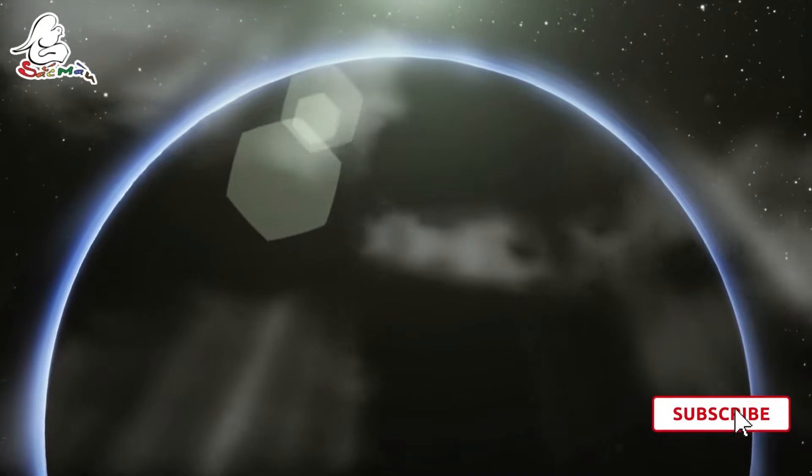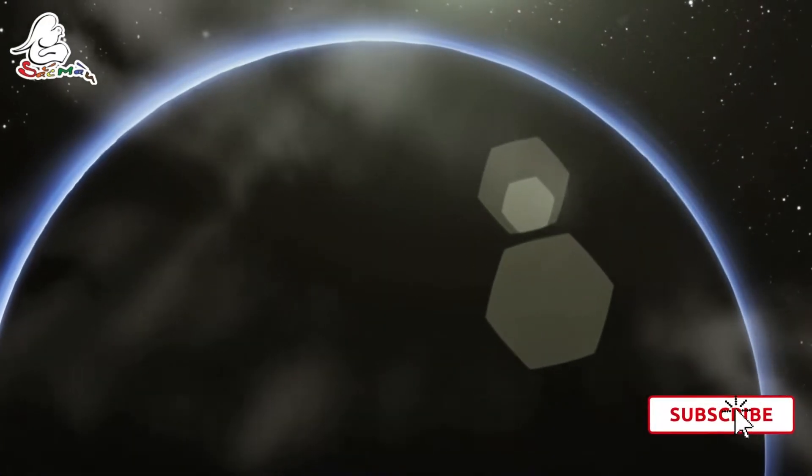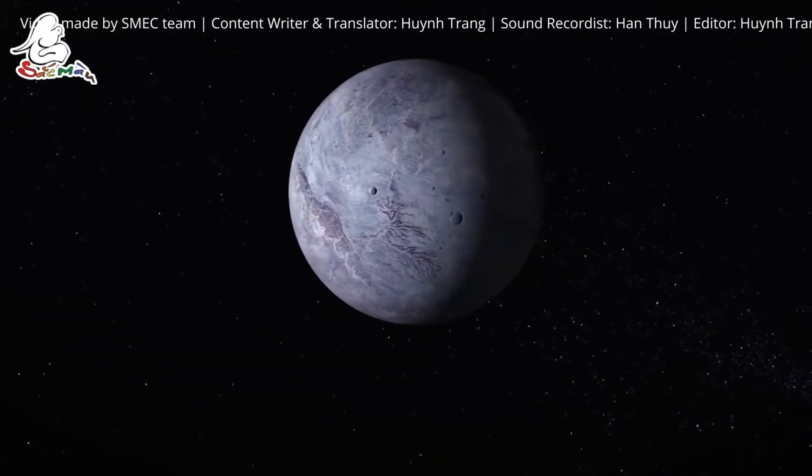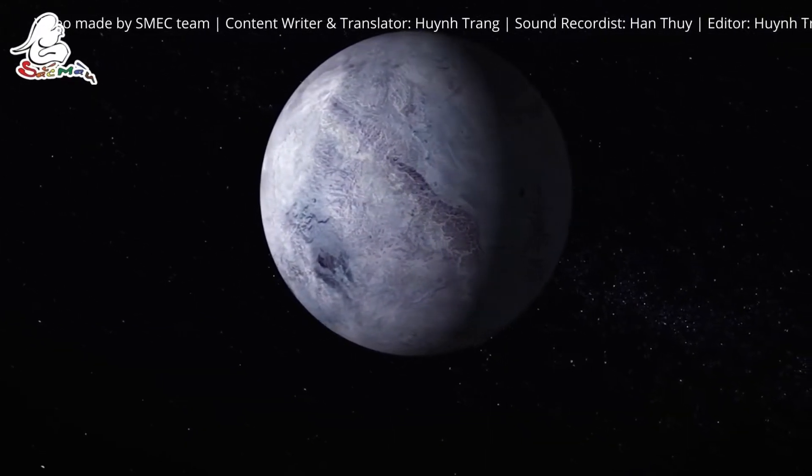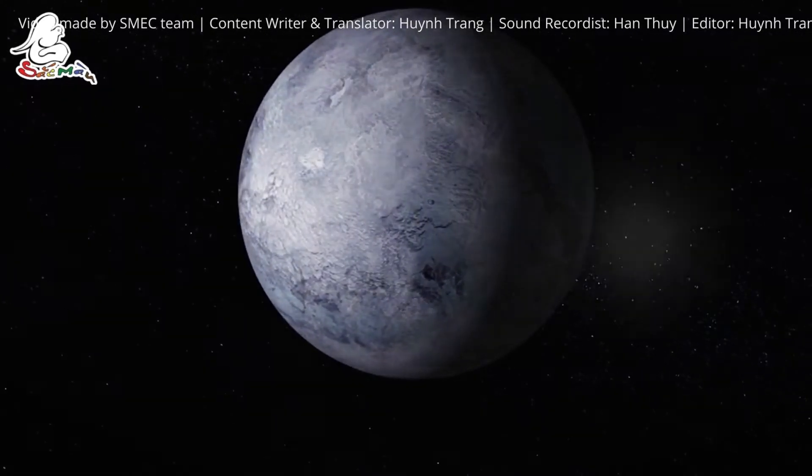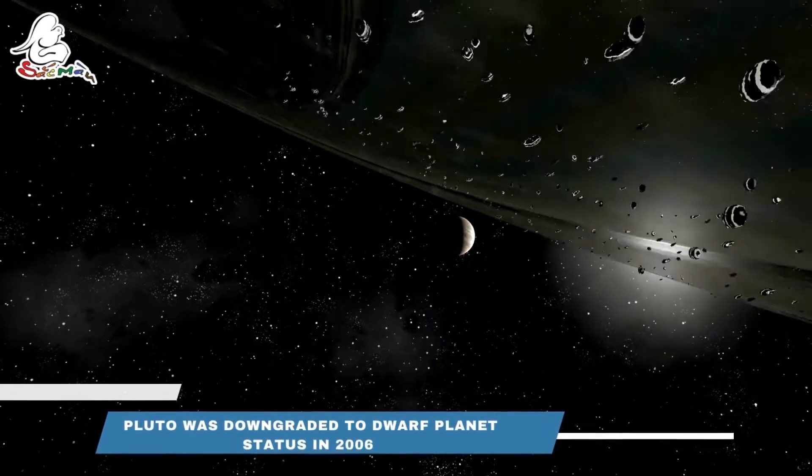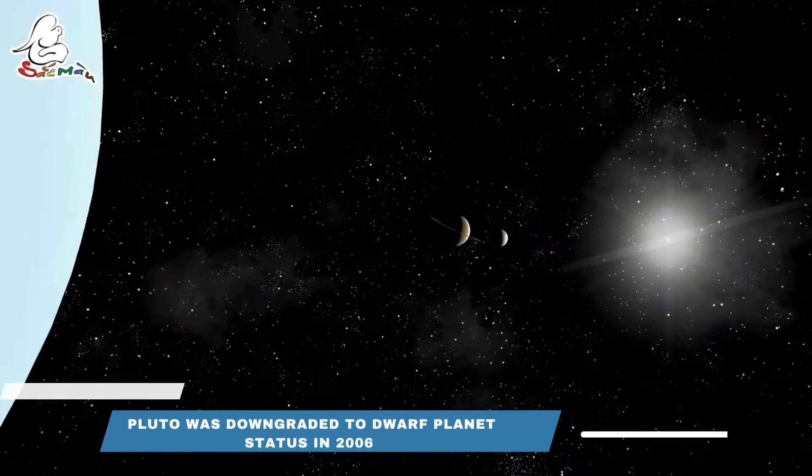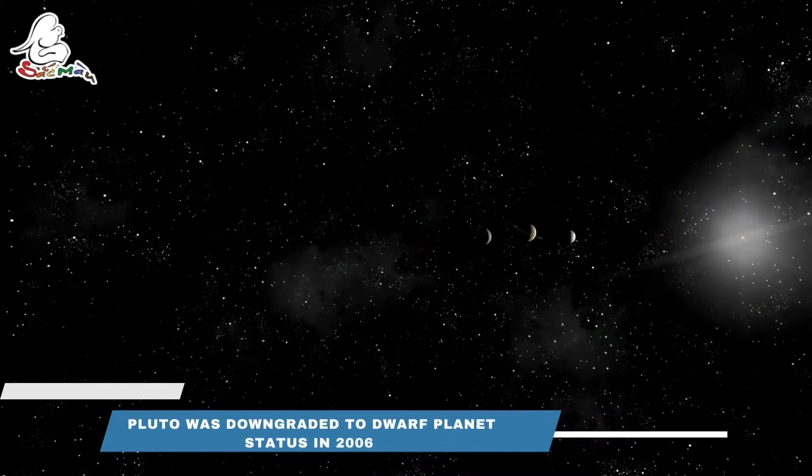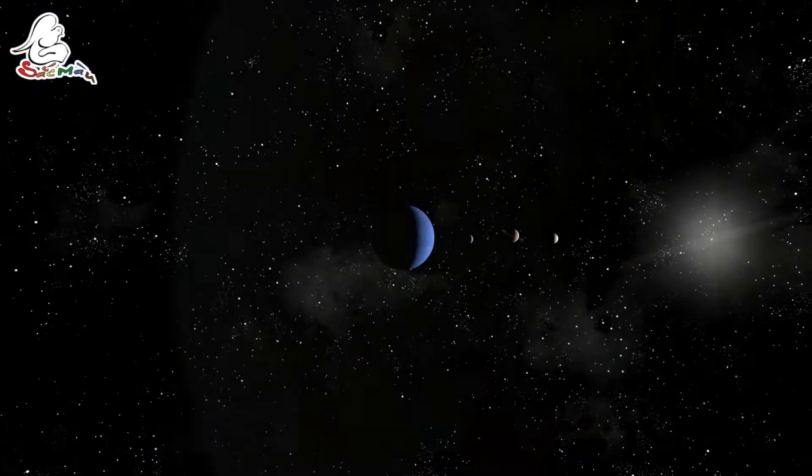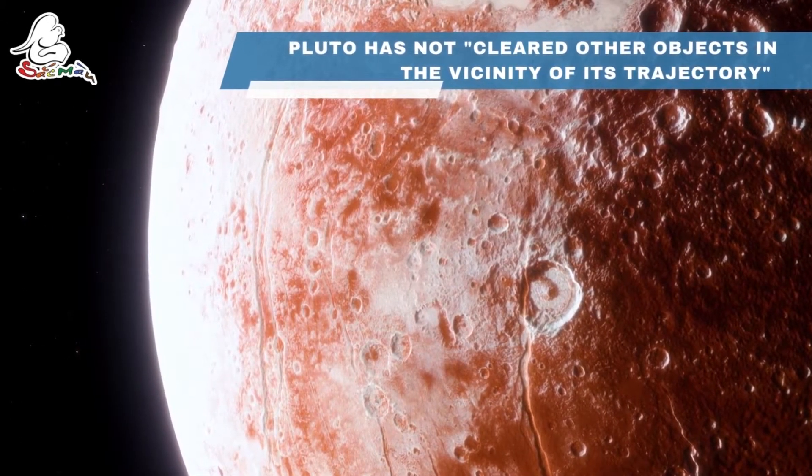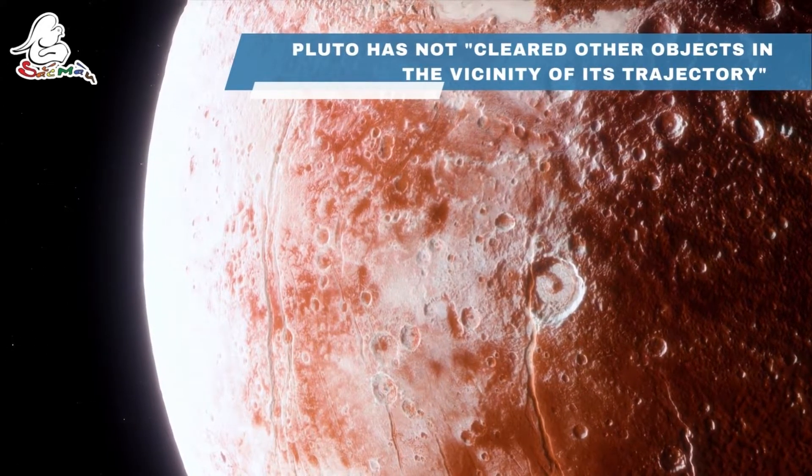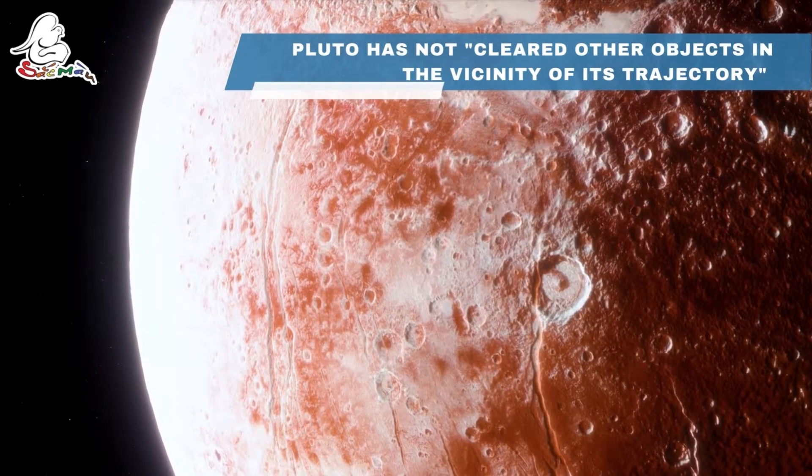Pluto was classified as the solar system's tiniest and most distant planets as soon as it was discovered. However, over those stellar decades, Pluto-like objects were discovered that were also massive enough to be planets. As a result, the International Astronomical Union decided in 2006 to reconsider a planet's scientific definition. And Pluto was downgraded to dwarf-planet status according to the International Astronomical Union. Pluto is a dwarf-planet in technical terms since it has not cleared other objects in the vicinity of its trajectory.